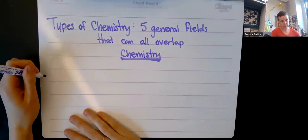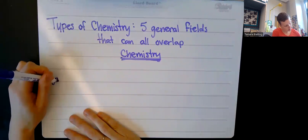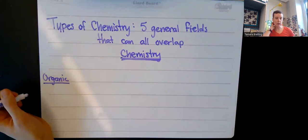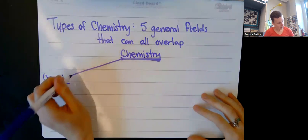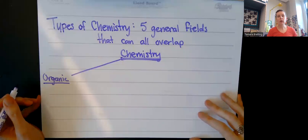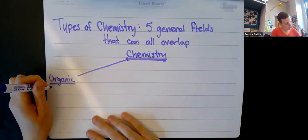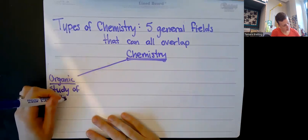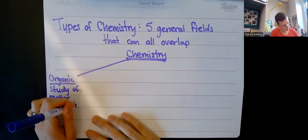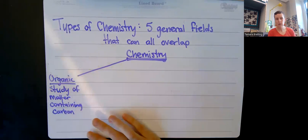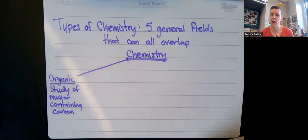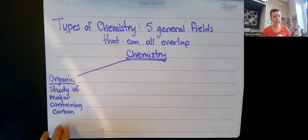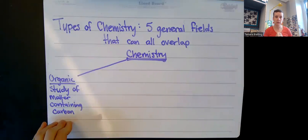My first type, all the way to the left, is organic chemistry. You may have heard this word before, especially if you go grocery shopping and see the organic section in the produce department. But organic in chemistry means the study of matter containing carbon. Carbon is the key element — that's a hundred percent what we're looking for when we think about organic chemistry.